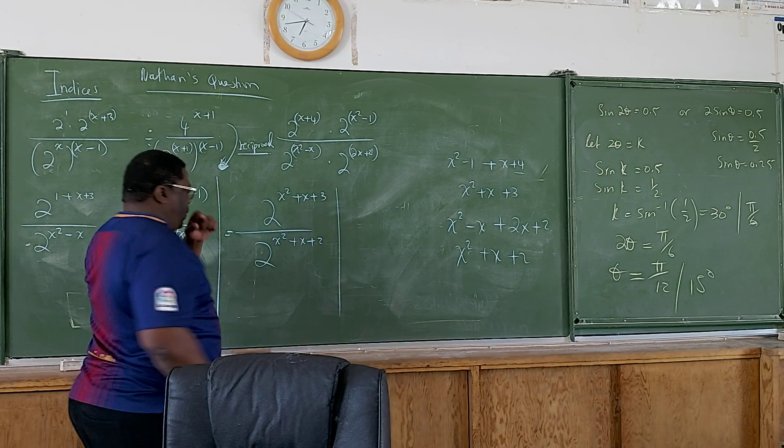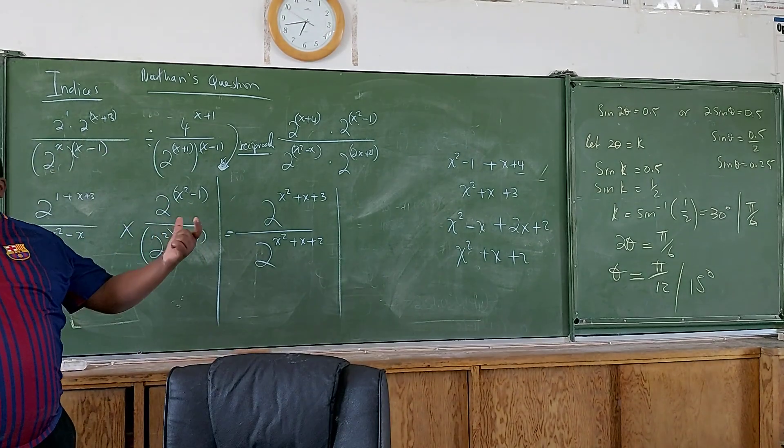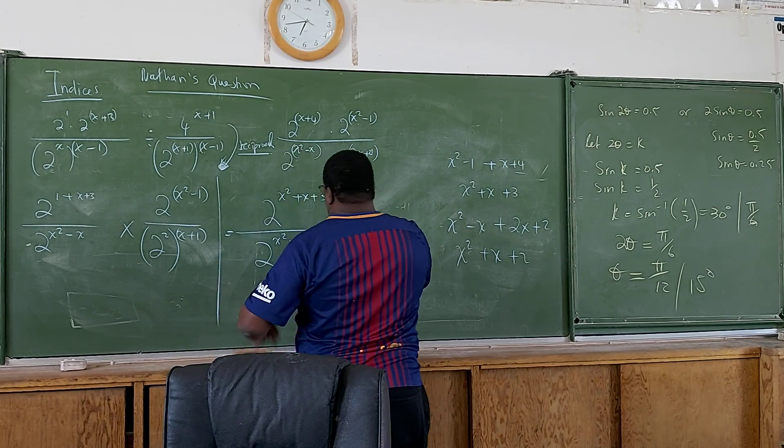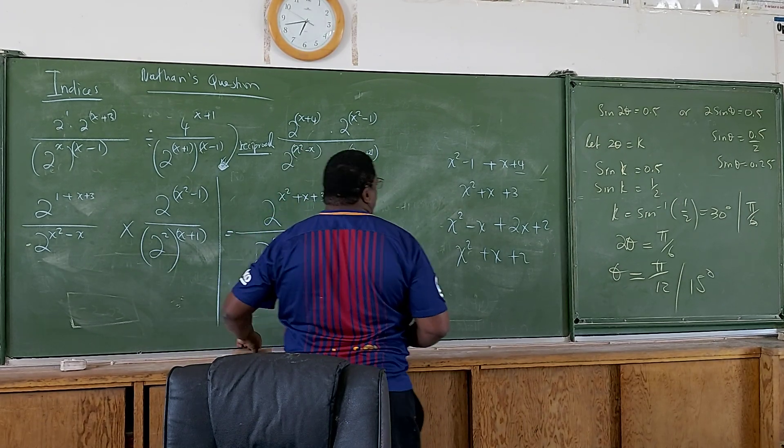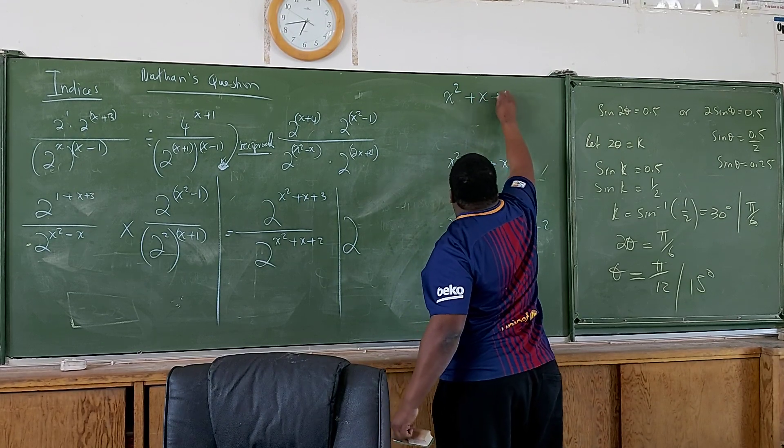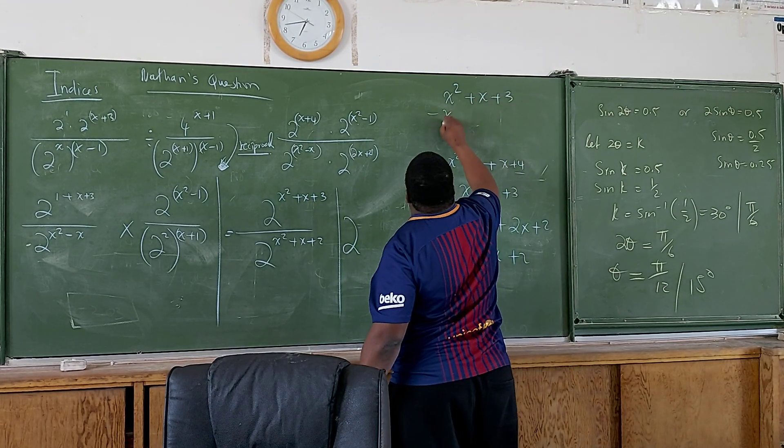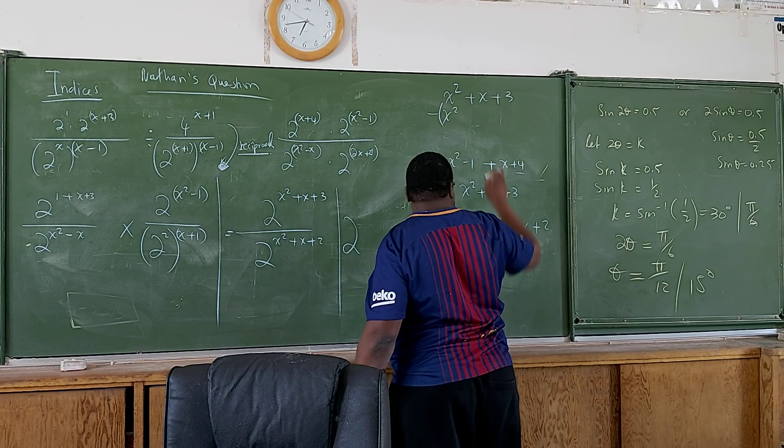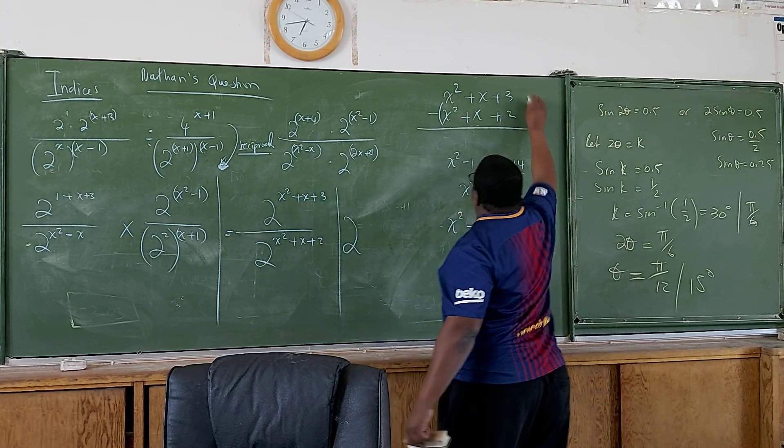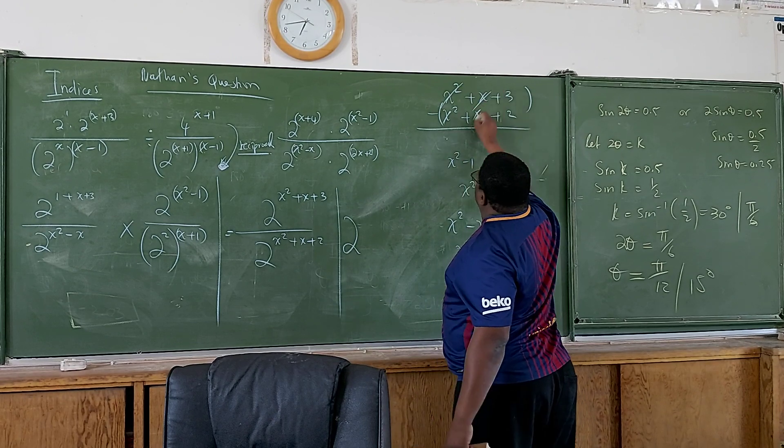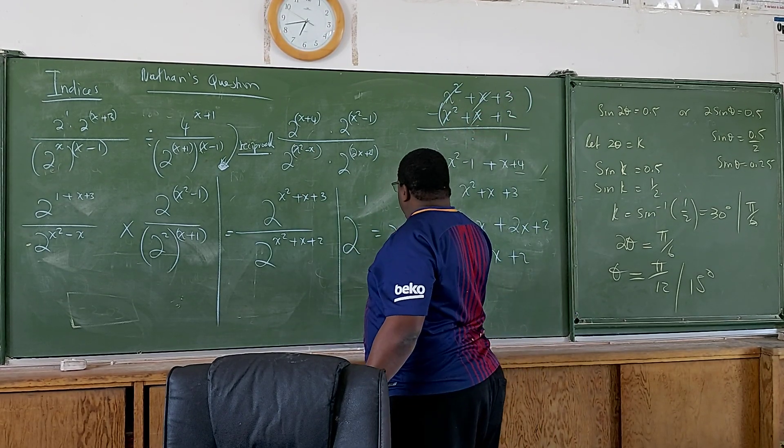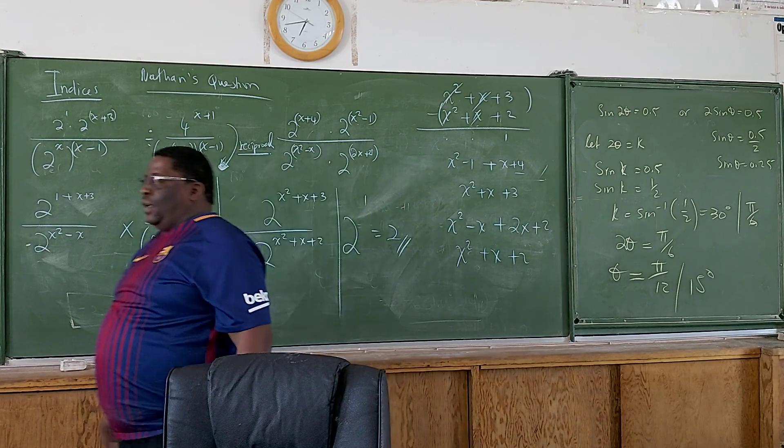From here, we are dividing, so we are going to subtract these two from each other. So 2 raised to, this whole thing here should be subtracted from that whole thing there. So it means x squared plus x plus 3, you minus x squared plus x plus 2. That gives you that, that gives you that, 3 minus 2 gives you that. So at the end of the day, that is what you are left with, and the answer is 2.